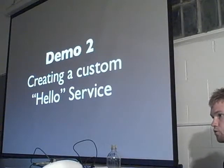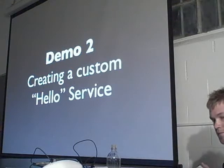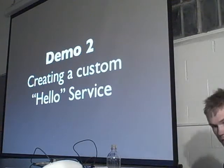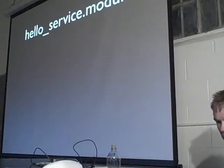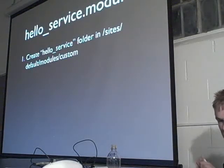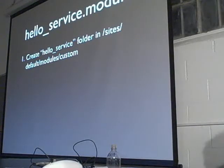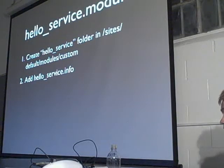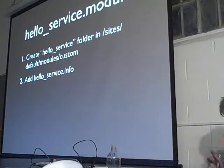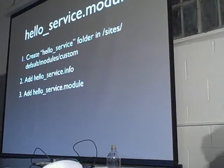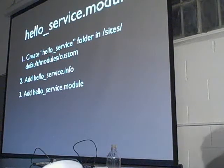So now I'm going to show you how to create your own custom service module. We're going to call it HelloService.Module. You need to create a HelloService folder inside of sites/default/modules/custom, which is where I like to put my custom modules. We're going to add a .info file, which is required for Drupal modules — that's how Drupal discovers that this folder is actually a module. We need to add HelloService.Module, which is going to contain the code for the module itself.